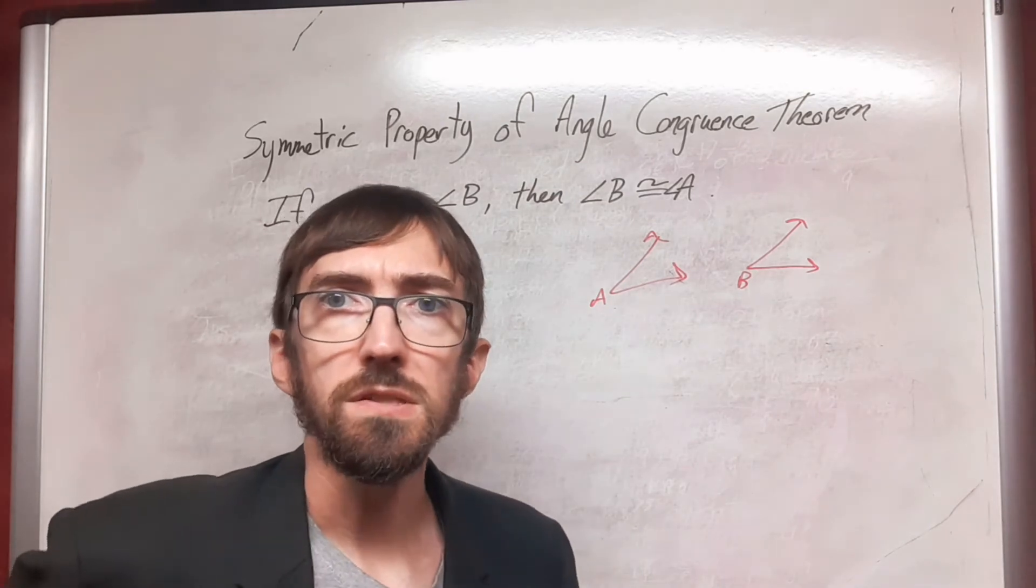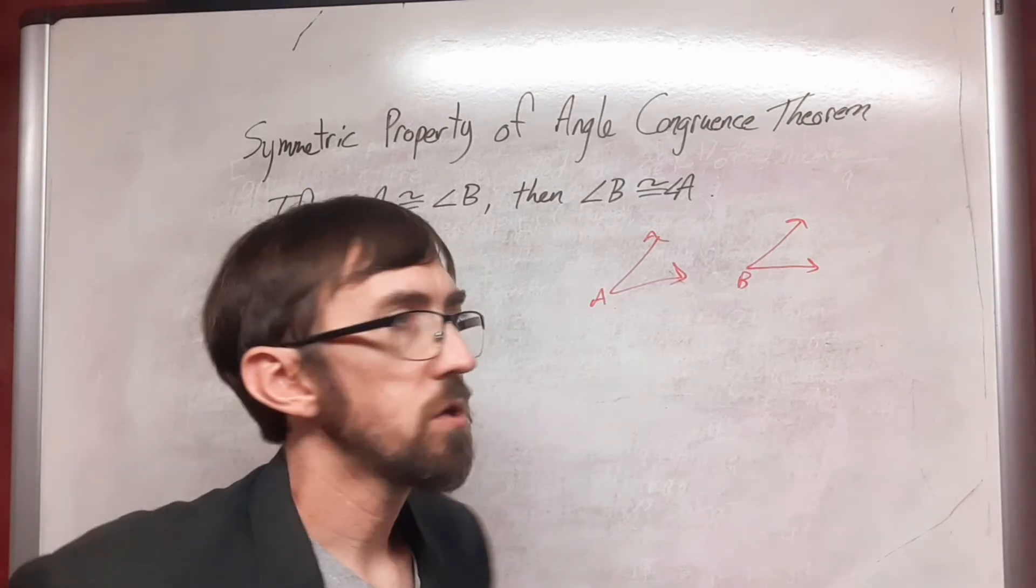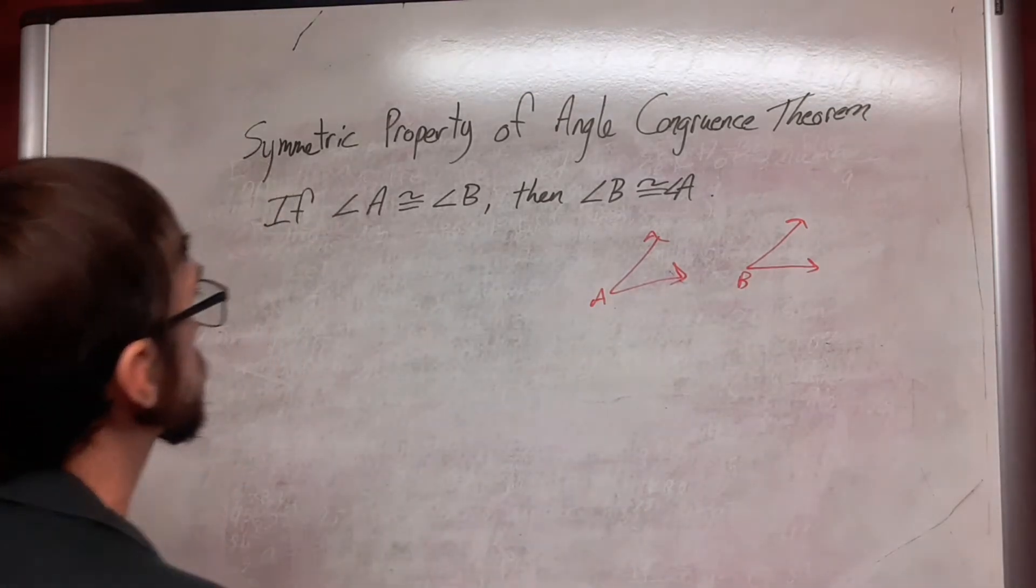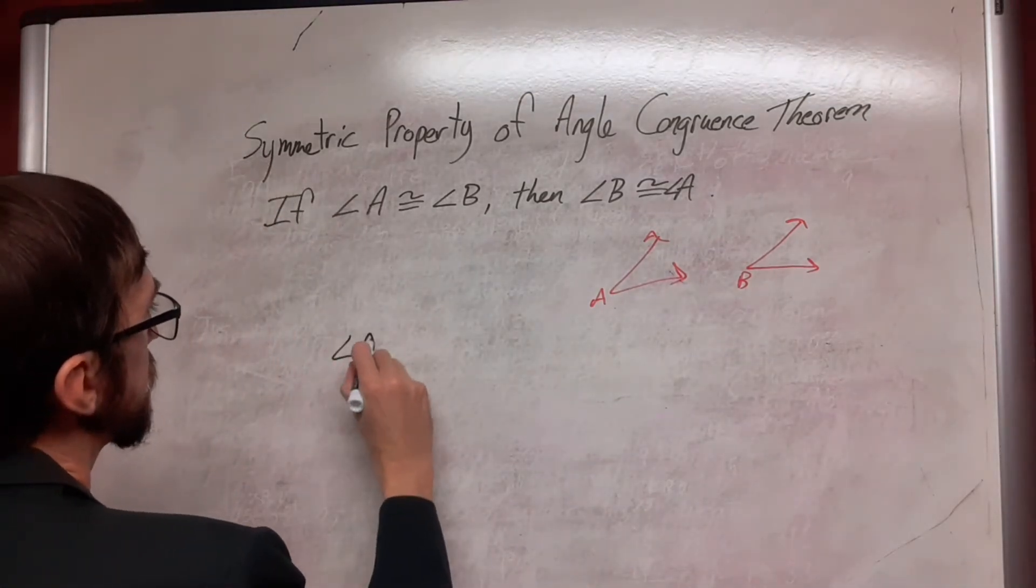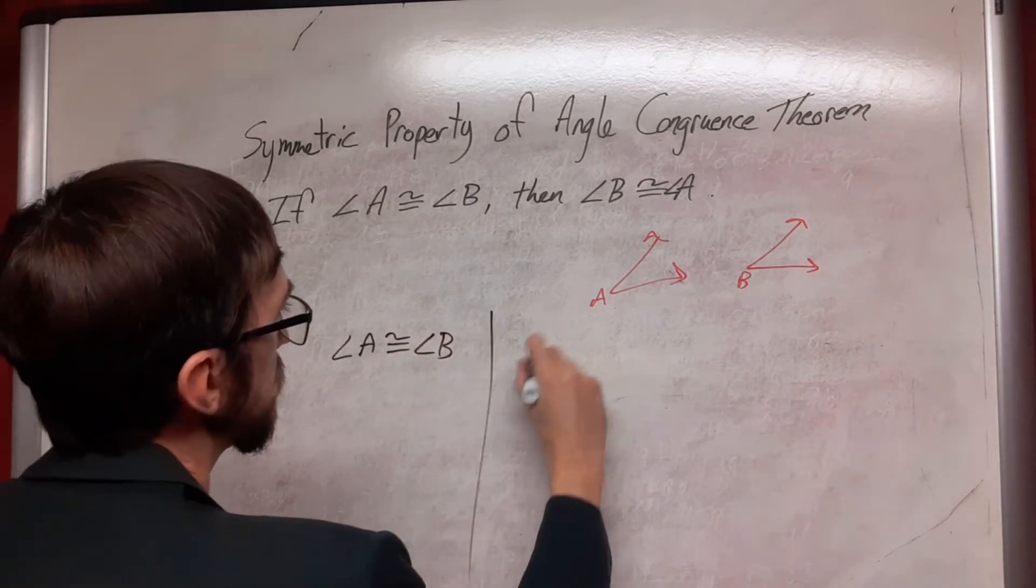And so now we're just going to write this out in a formal way. So we always want to start with our if statement. So we have that angle A is congruent to angle B, and that is given.